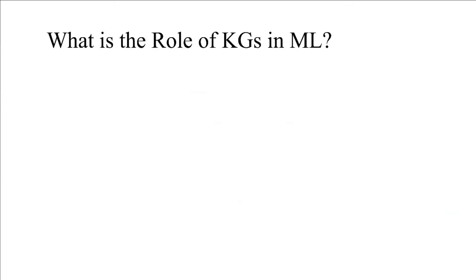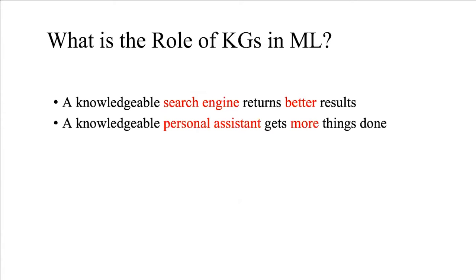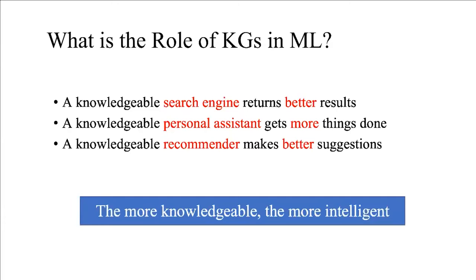What is the role of knowledge graphs in machine learning? A knowledgeable search engine returns better results, a knowledgeable personal assistant gets more things done, and a knowledgeable recommender makes better suggestions. The more knowledgeable, the more intelligent.